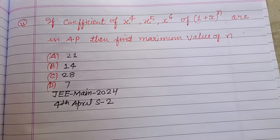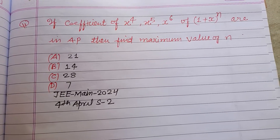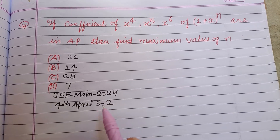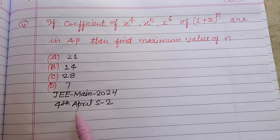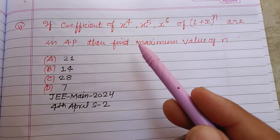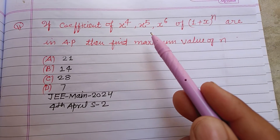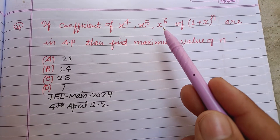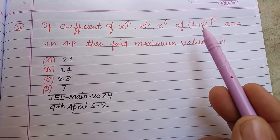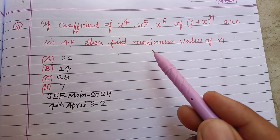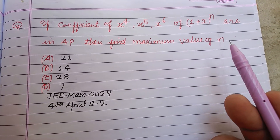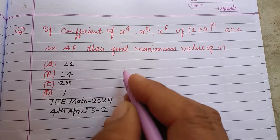Hello guys, welcome to the YouTube channel. This is the question of the first step in the second. The coefficient of x to the power 4, x to the power 5, x to the power 6 of 1 plus x to the power n are in AP. Then find the maximum value of n.